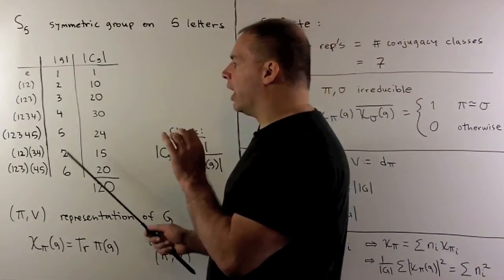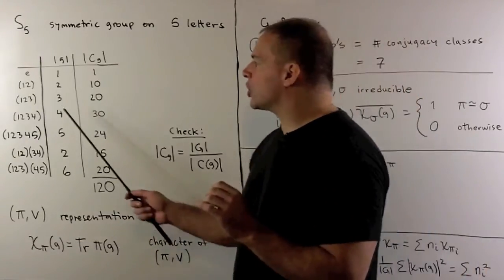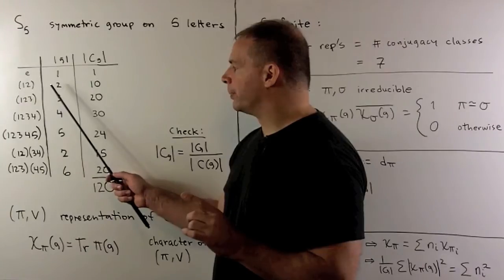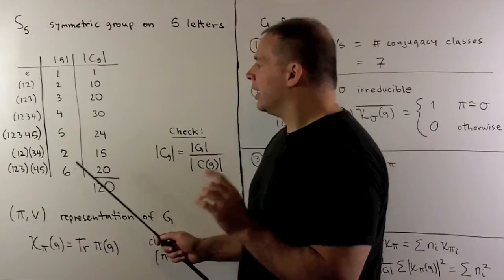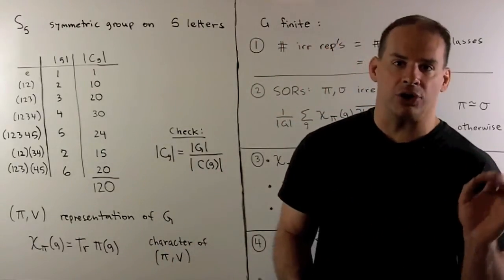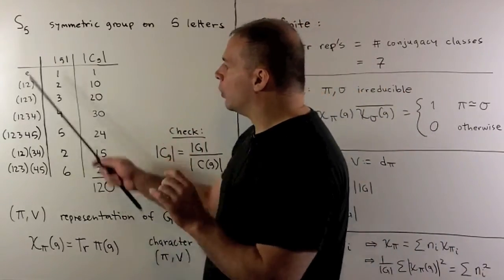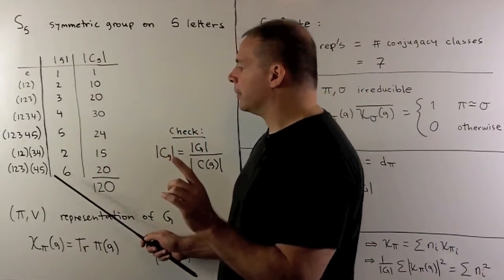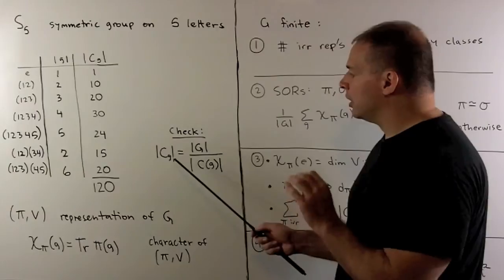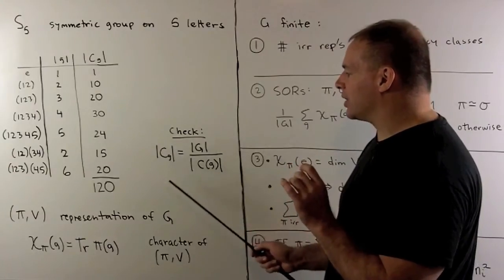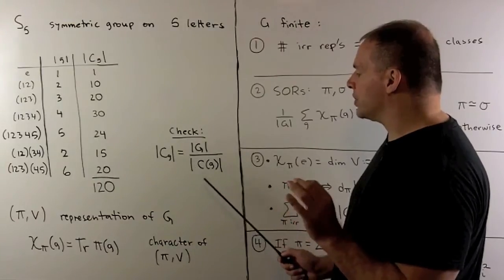If we use cycle notation for elements, then each conjugacy class can be represented by the cycle structure of the elements that it contains. That means we have seven classes, and we need to know the number of elements in each class for our character tables. For S4, we work these out just by counting, so I'll leave this as an exercise. You can check your counts by using the formula: the number of elements in the conjugacy class of the element g is equal to the order of our group divided by the order of the centralizer of g.